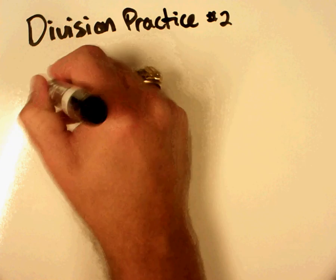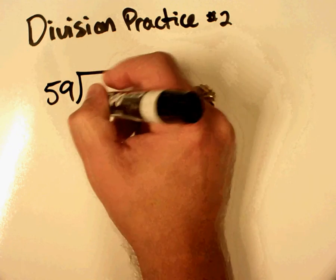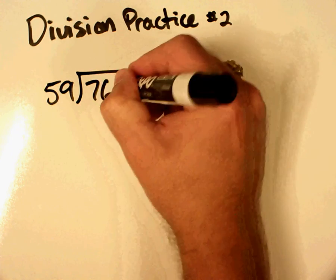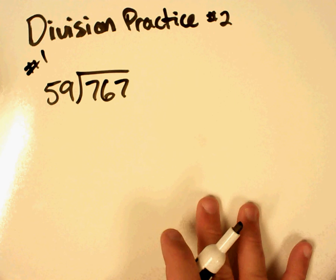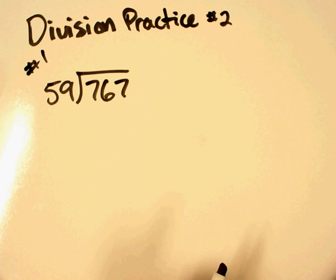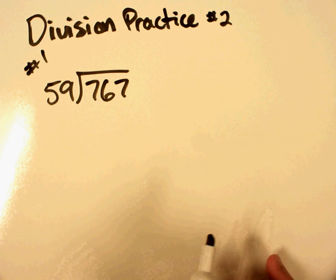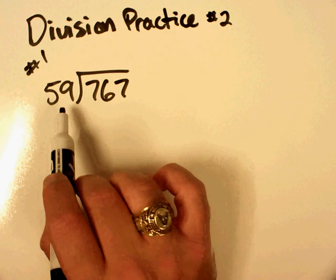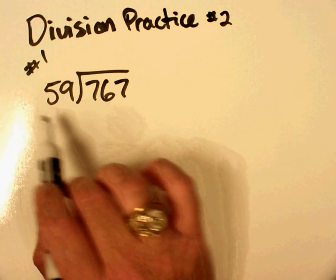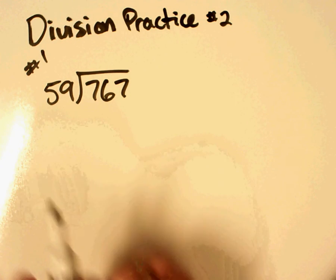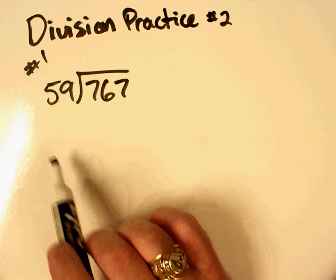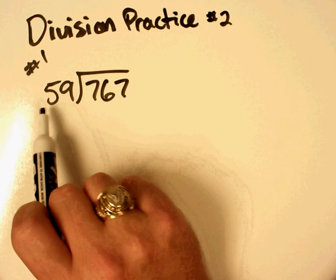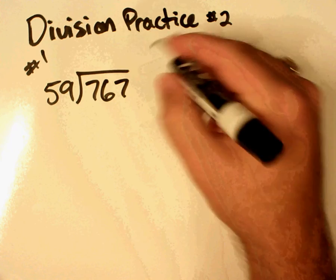We're going to start with this first problem, which if you have the companion assignment is number one, 767 divided by 59. Now, there's a couple of ways when we're doing division where we have a two-digit or even a three-digit or four-digit divisor. The first thing you can do is if you are good at estimating, if that's a skill that you've mastered, then that's where this skill can really come in handy because we can round this 59 to a 60.